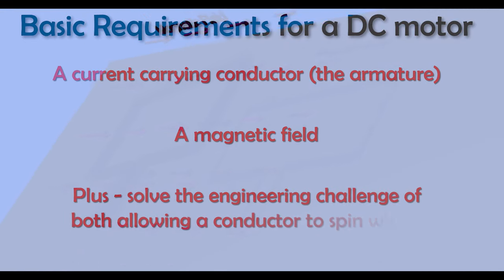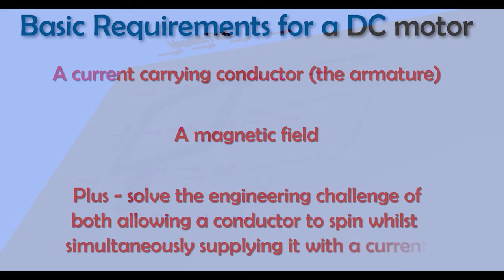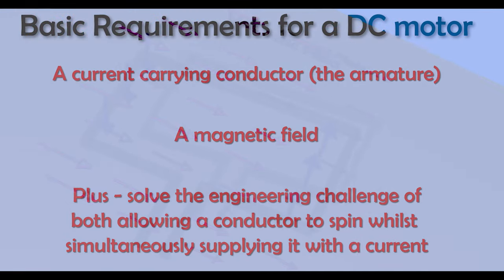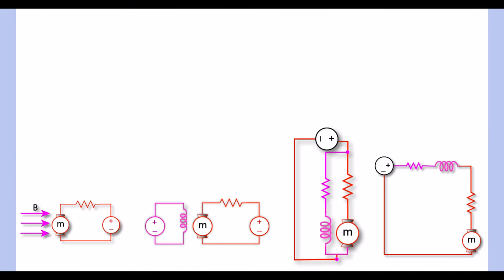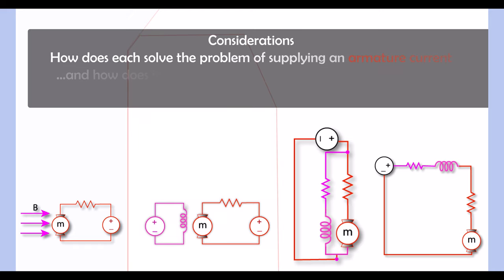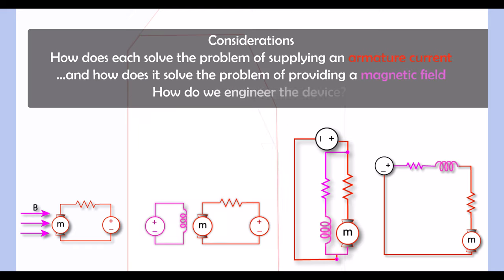Second, we need a magnetic field, and third we need to solve the engineering problem of allowing the conductor to spin without becoming tangled. In this video we'll address four DC motor configurations, and just remember that each one has a slightly different way of solving the three basic requirements — that's why there are different types.